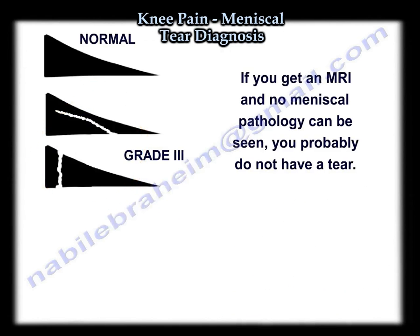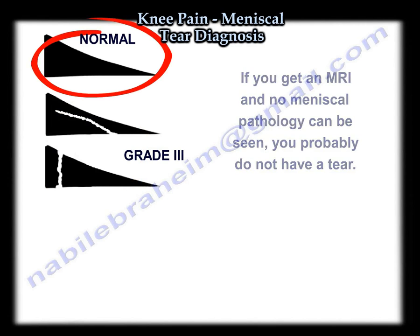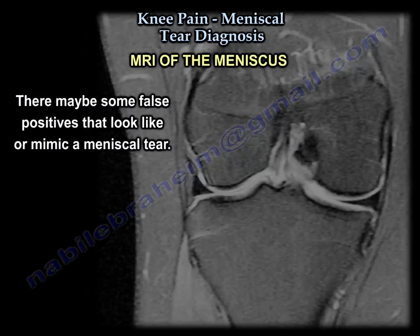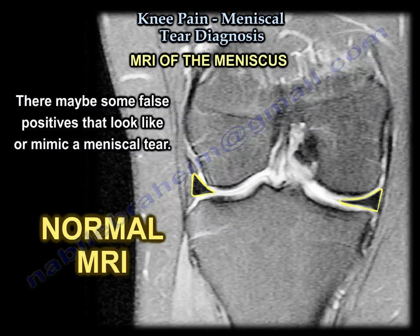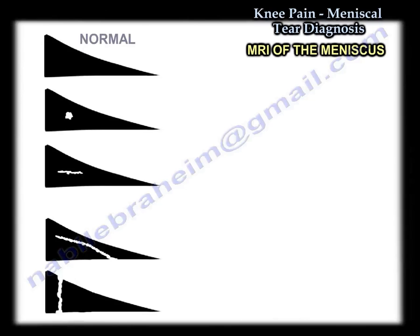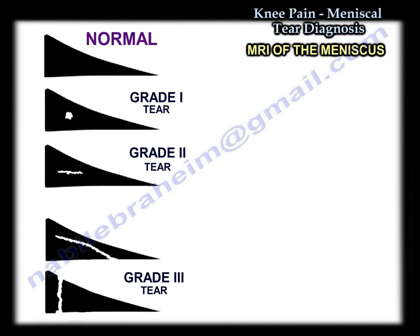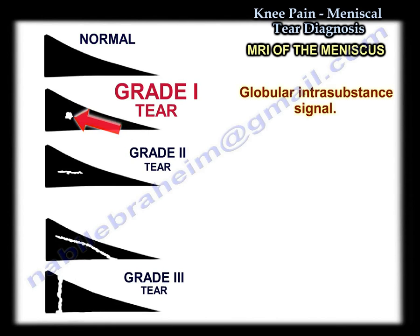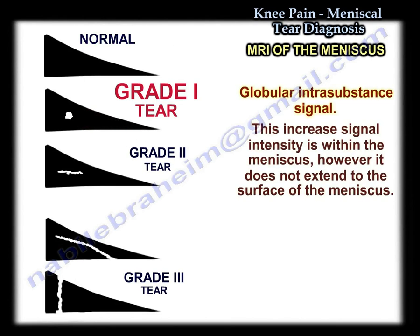If you have an MRI with no meniscal pathology, you probably don't have a tear. However, there might be some false positives that are not actually a tear but look like one. This is a normal meniscus, and this is grade one — in grade one you see a globular intrasubstance signal. This increased signal intensity is within the meniscus but does not extend to the surface.